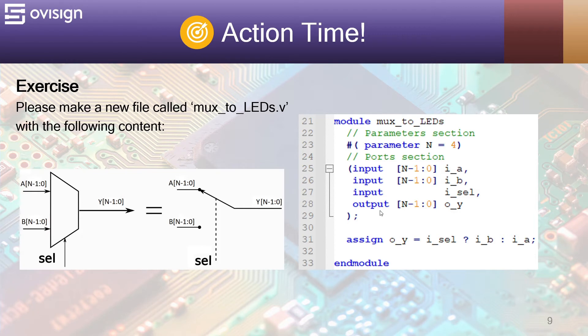To describe multiplexer in Verilog you can use simply a continuous assignment. So y will equal b if i_sel is 1 otherwise it will equal a.